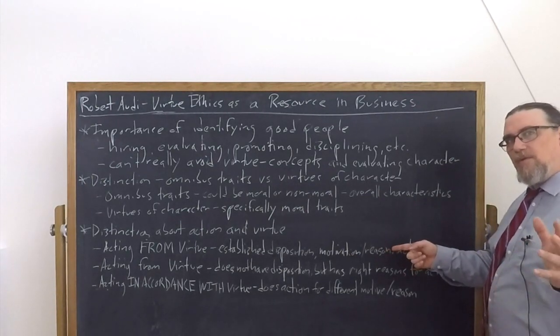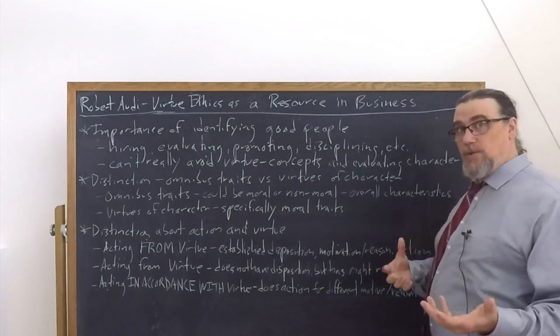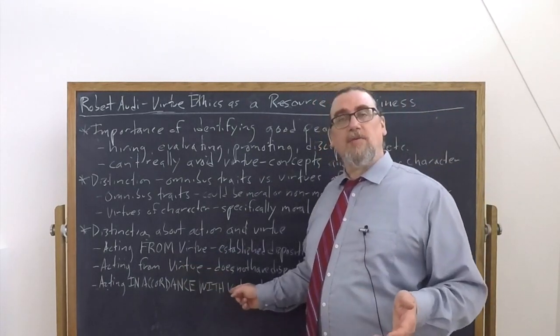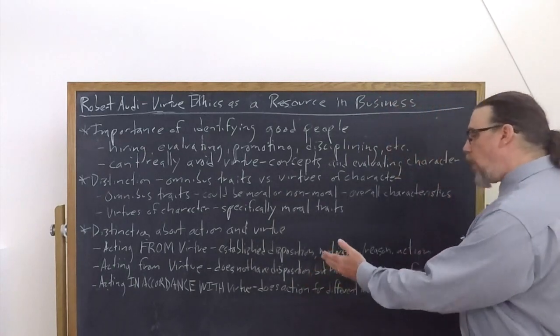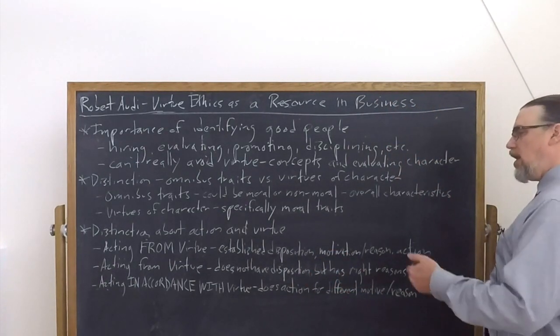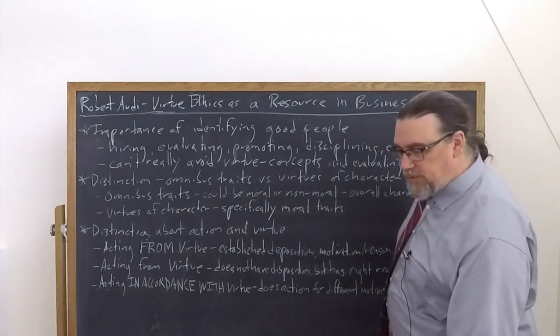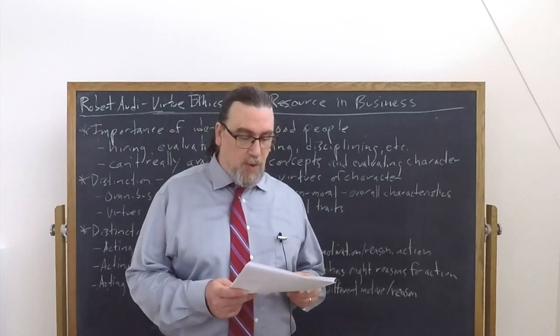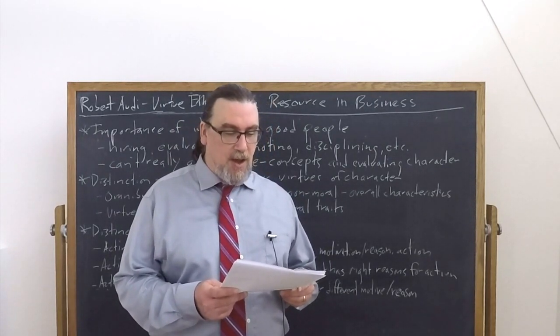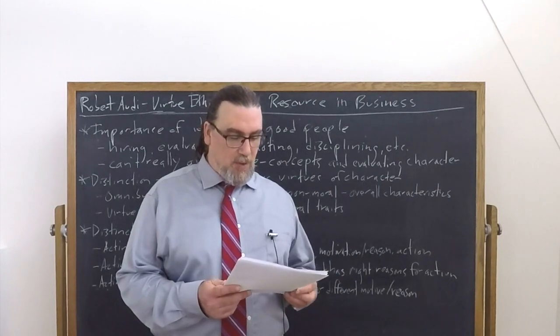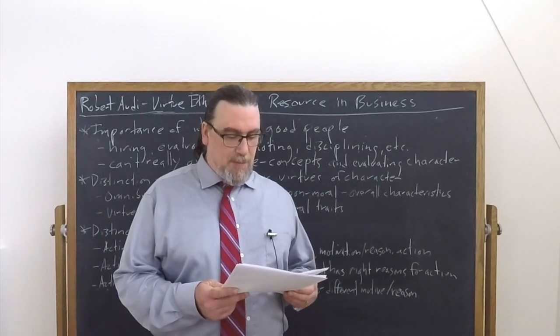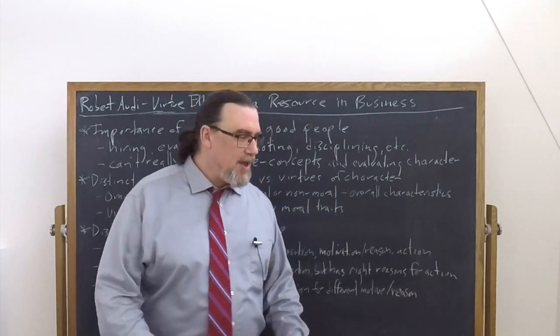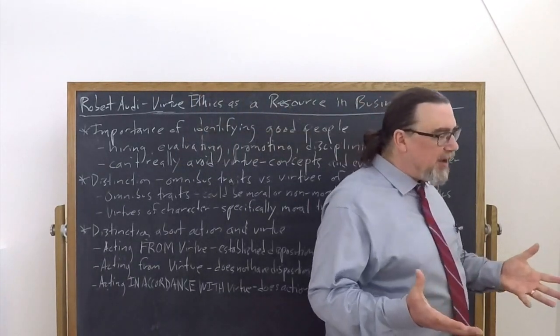So you have the established disposition, you have the right reasons or motivation for acting, and then you do the right action. It's also possible to be acting in accordance with virtue and not be virtuous. You don't have the disposition at all, and you do the action for some different motivation or reason. He talks about the person who is establishing a Ponzi scheme, for example. That's not a good thing. But you could do some things in the course of that that are good things.